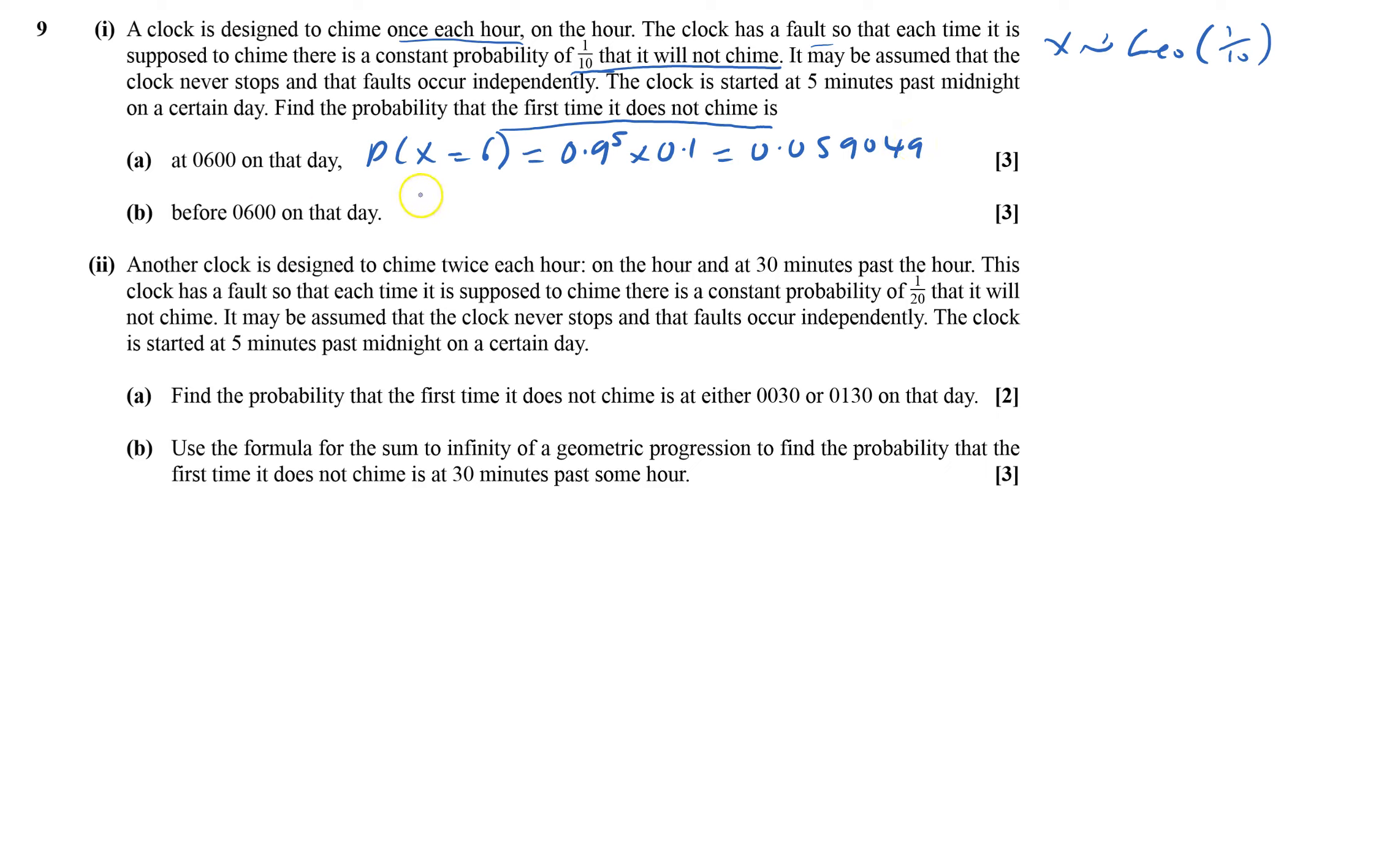Before 6 on that day, I've got to work out the probability that X is less than or equal to 5. So it can be 1, 2, 3, 4, or 5. That will equal 1 minus the probability that X is greater than or equal to 6. That means it must have had five correct rings to start off with. Calculate 1 minus 0.9 to the power of 5, which is 0.40951.